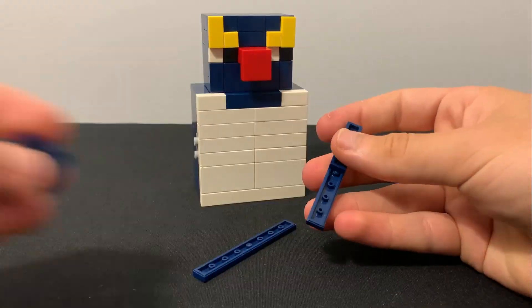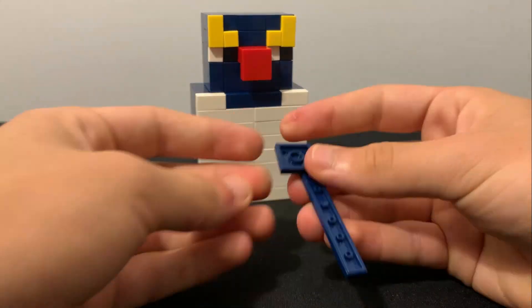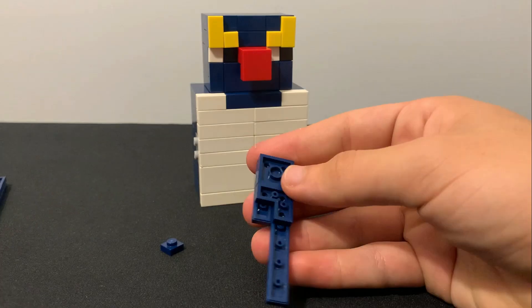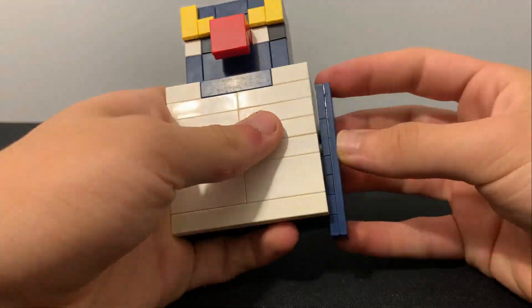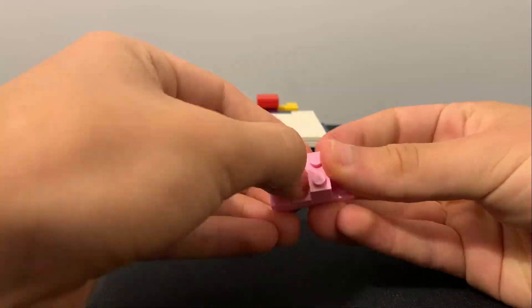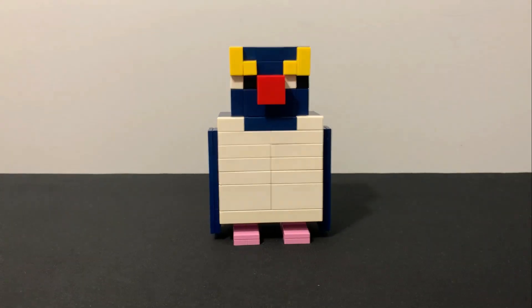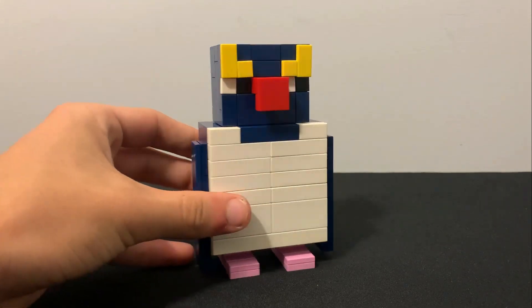Once the base of the penguin was done, it was time to add the finishing touches. You can see I'm just really trying to squeeze the last little bits out of my dark blue brick collection. The final feature of our penguin is going to be the legs. For those, I used a couple pink plates, tiles, and bricks and I attached them to the bottom. And with that, our penguin is done.